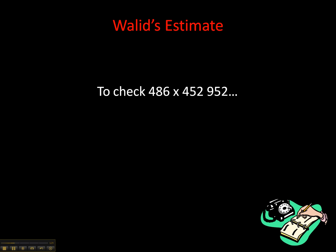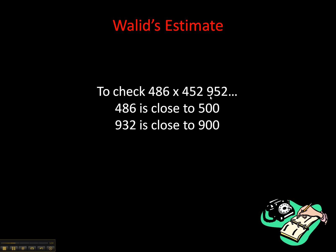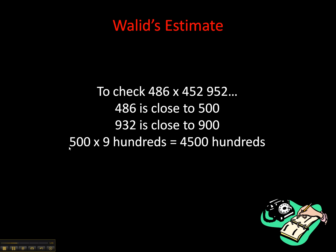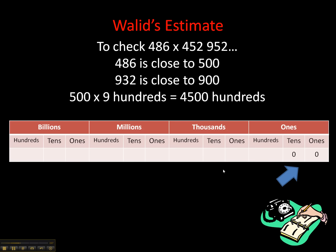Waleed decides that 486 is close to 500 and 932 is close to 900, so he rounds to the nearest hundred — rounding up in one case and down in the other. He multiplies 500 times 900, making it easier by multiplying 5 times 9 to get 45, then adding two zeros. Using a place value chart, since it's 4500 hundreds, he drops those zeros in the ones period and finds his final answer is 450,000.